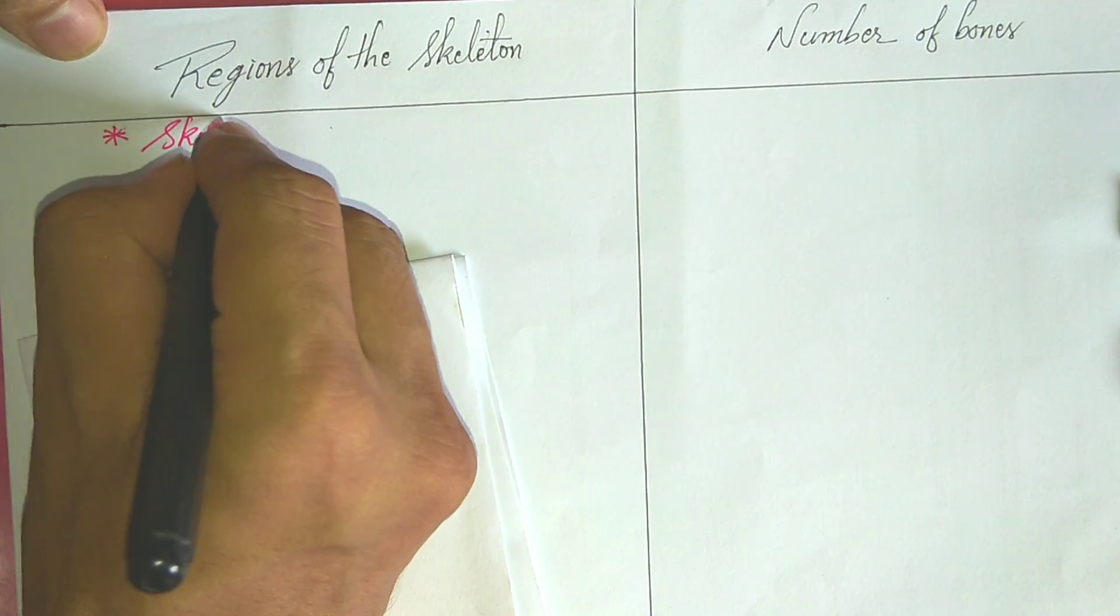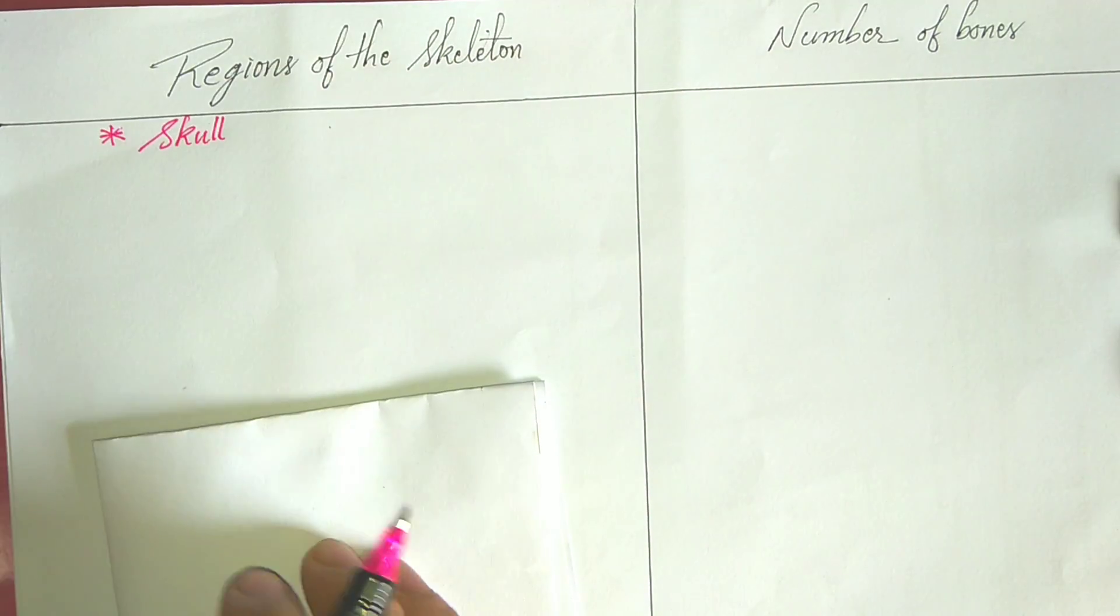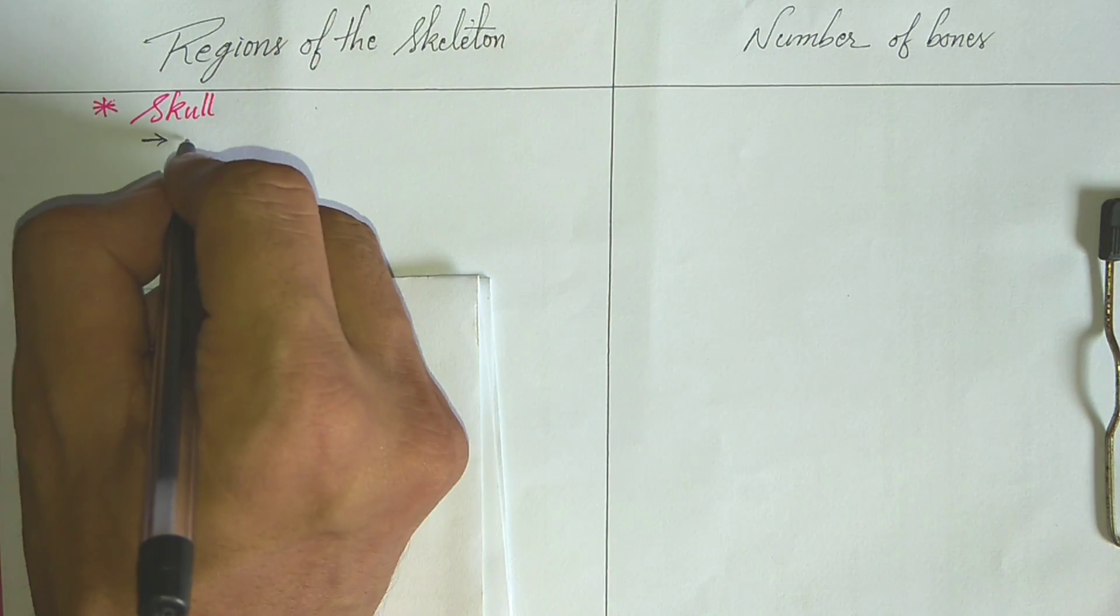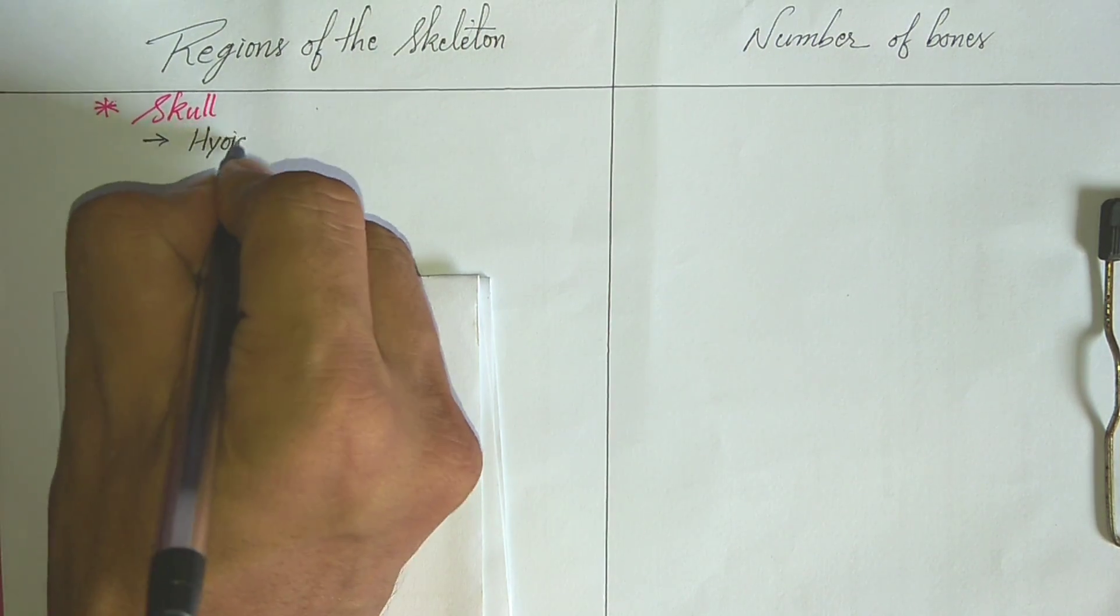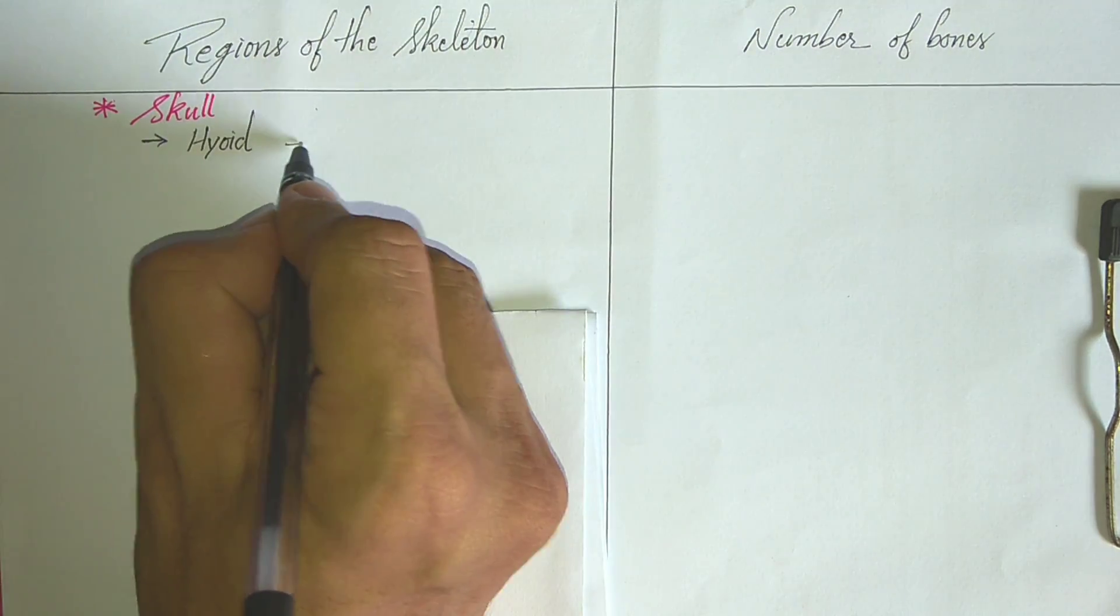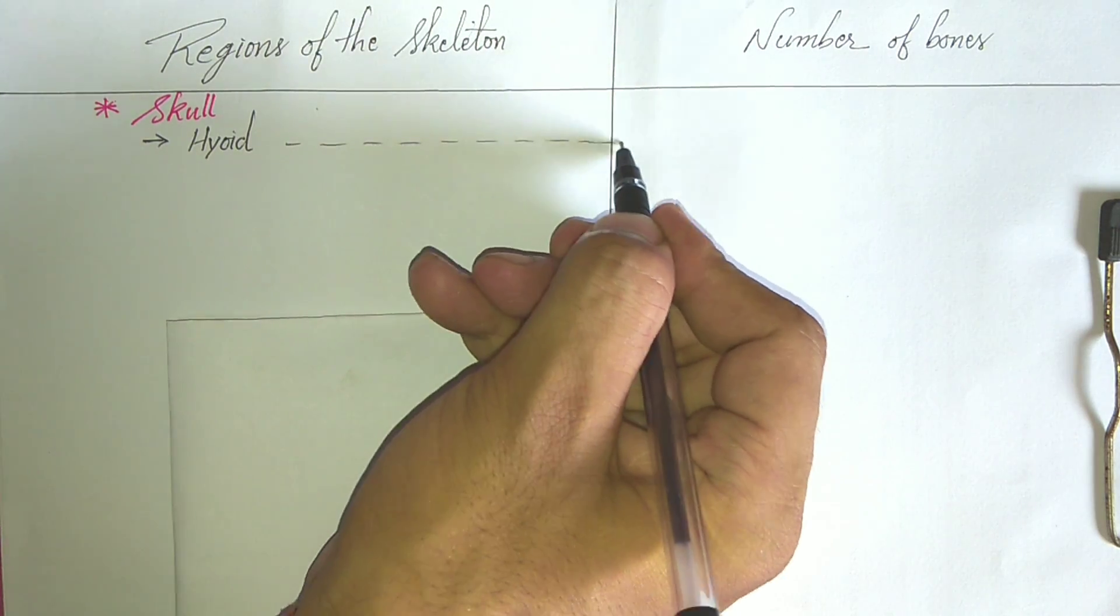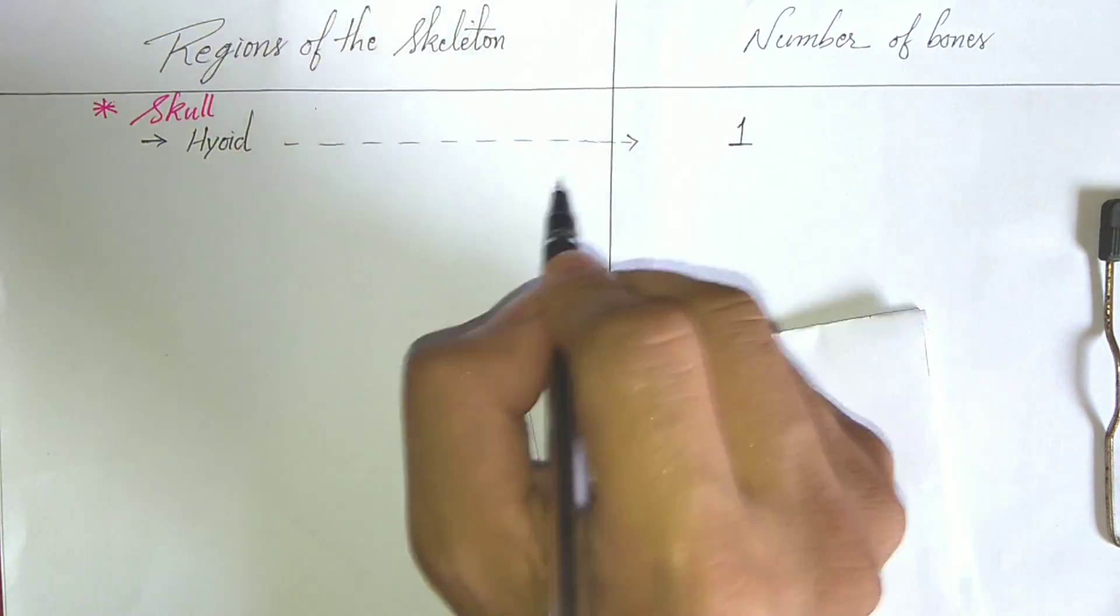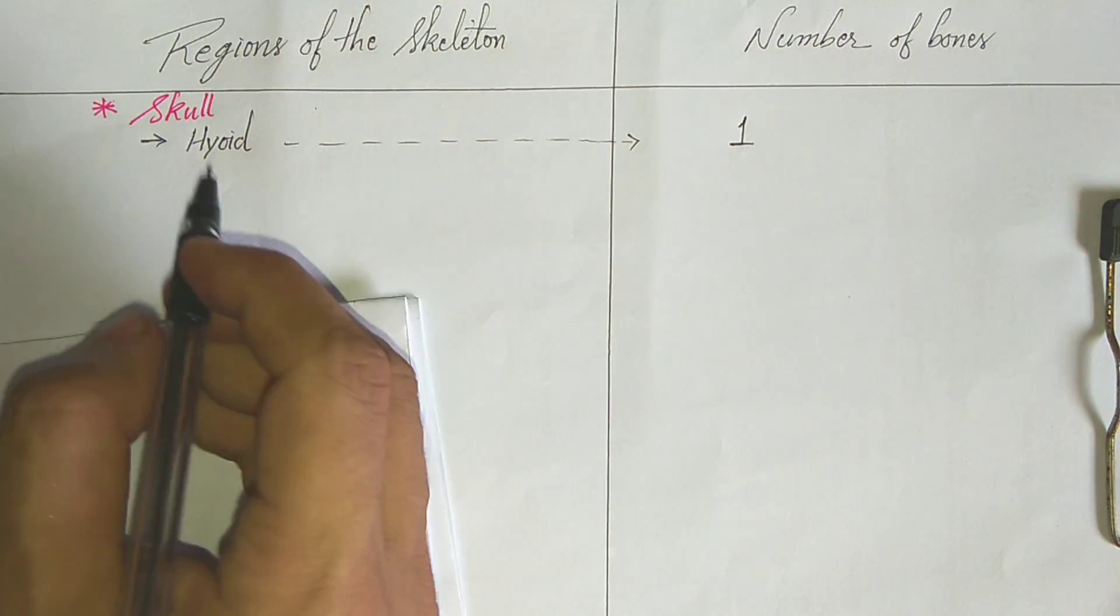In the skull region, hyoid bone is present. How many hyoid bones? Only one hyoid bone is present in our body.